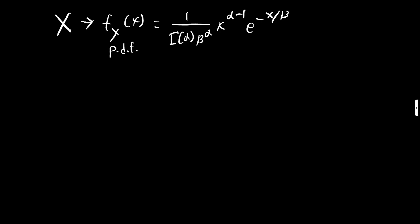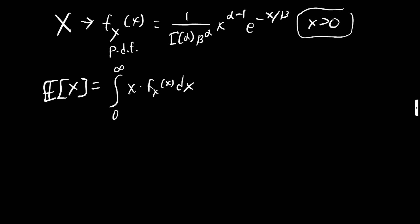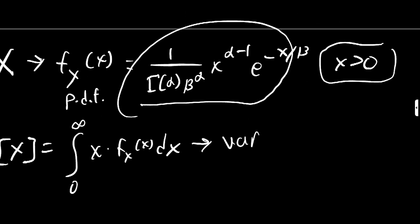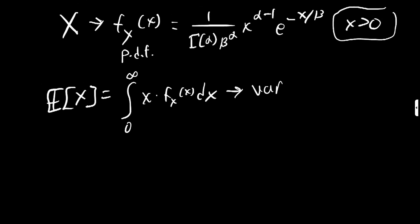The question is: how do you find the expected value of this? We're going to use the definition — the integral from 0 to infinity of x times the PDF of x, since the gamma distribution requires positive x values. The fun part of this problem comes from the fact that we use the gamma function itself, which is very nicely tied in here.